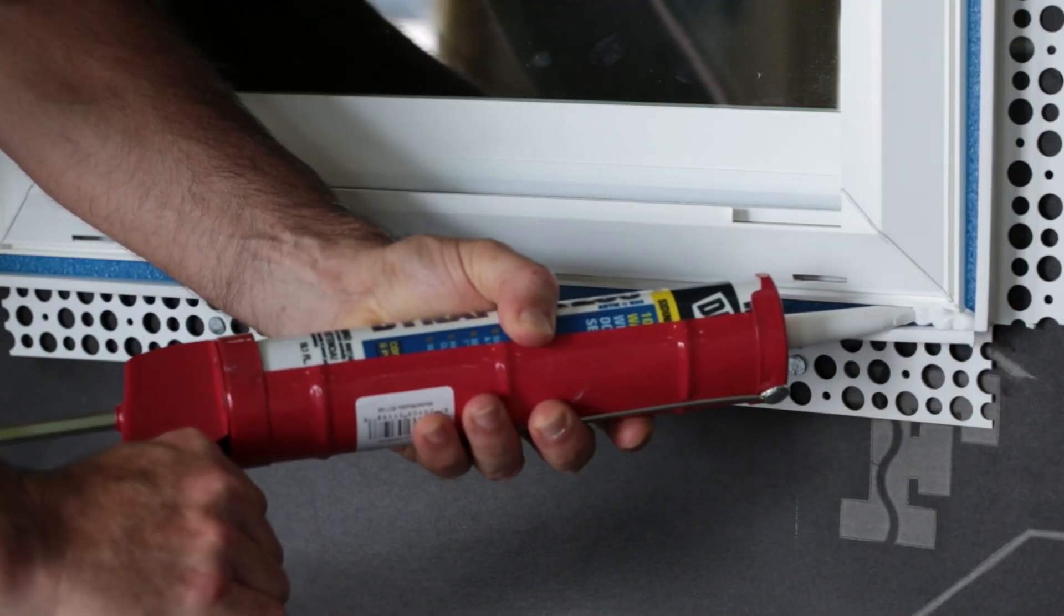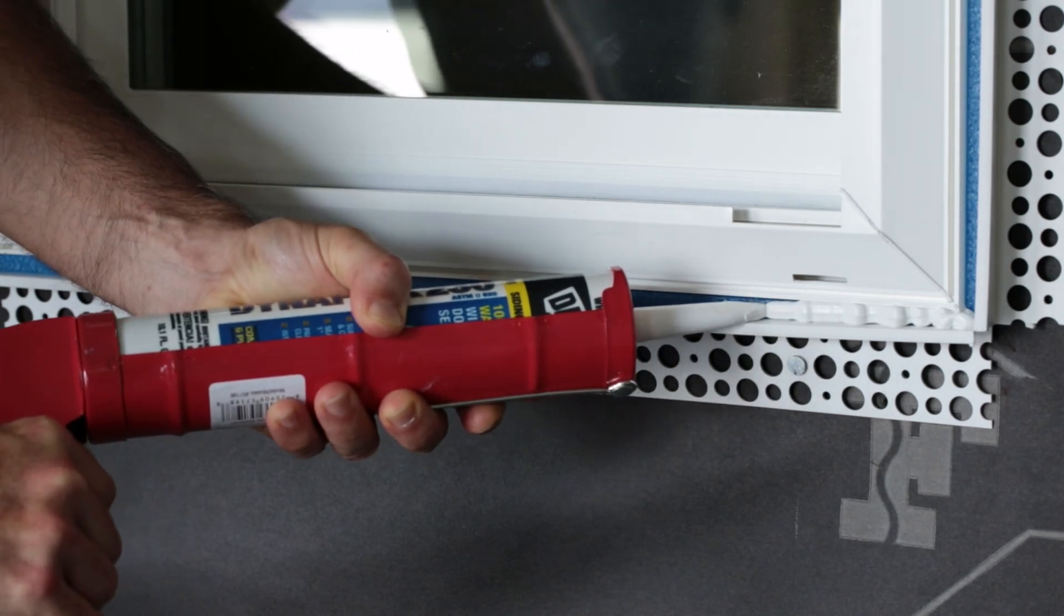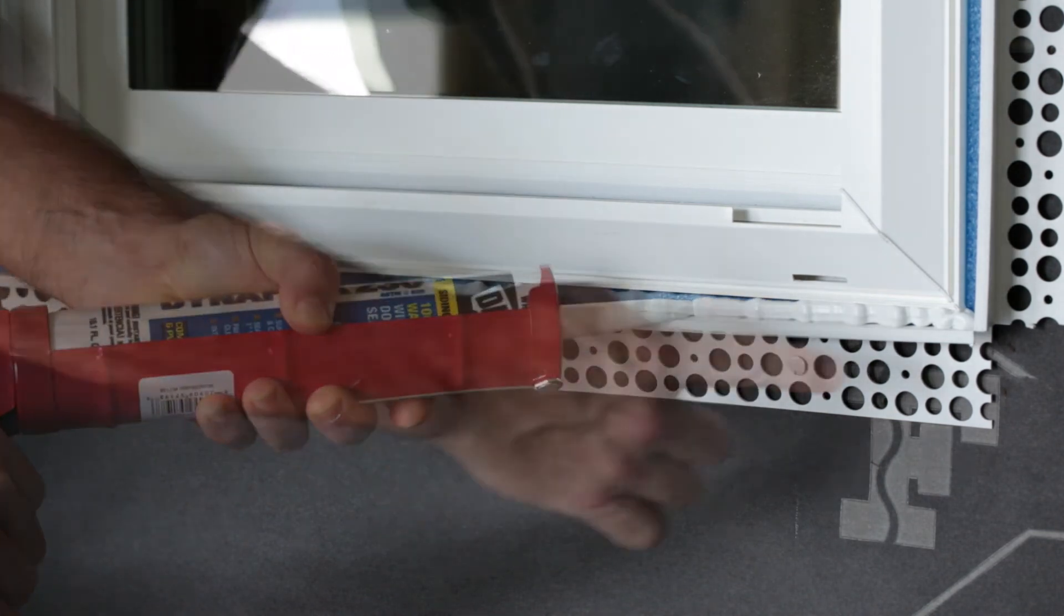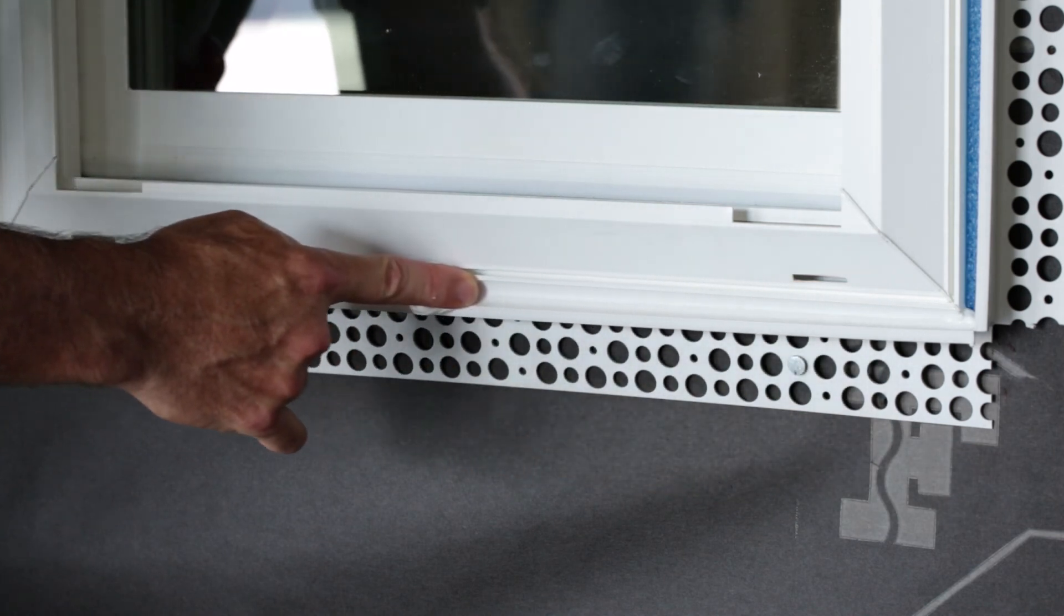Once installed, the blue rod provides a visual inspection. Quality control is built in. If the blue is still visible after caulking, you know caulk was not properly applied.